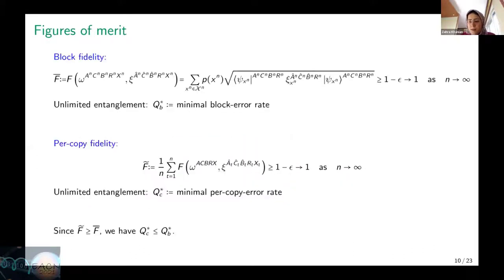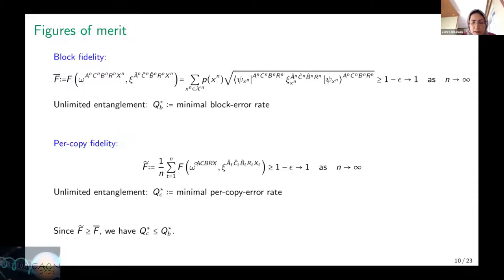We consider two figures of merit for this closeness. The first is block fidelity, which is conventional in data compression and is the figure of merit for quantum state redistribution, state merging, and Schumacher compression. The second is per-copy fidelity: instead of preserving fidelity for whole blocks of states, we want to preserve fidelity for each individual copy. This second criterion is looser, so we expect to get smaller rates compared to the block fidelity case.